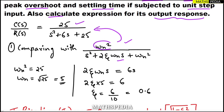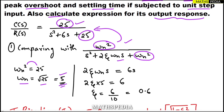When we compare, omega_n² corresponds to 25, so omega_n² = 25, which gives omega_n = √25 = 5. That is our natural frequency.